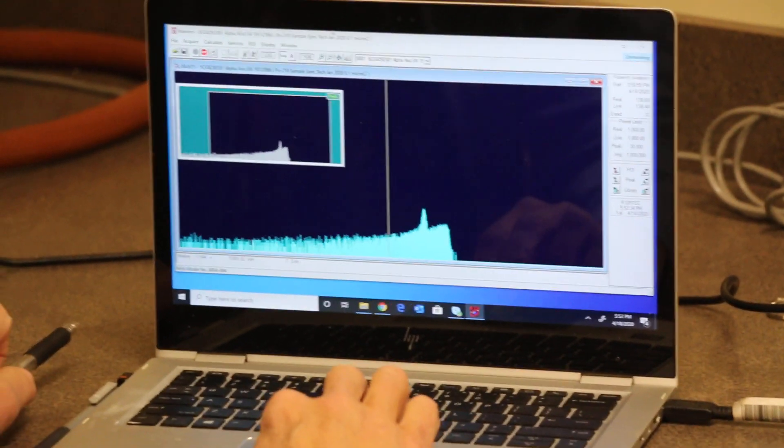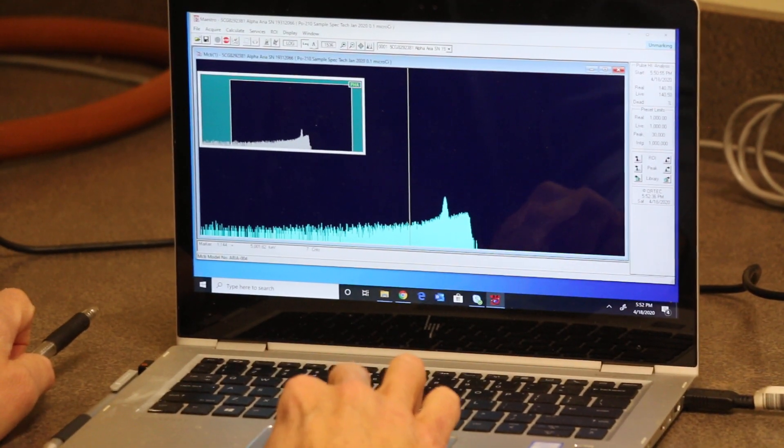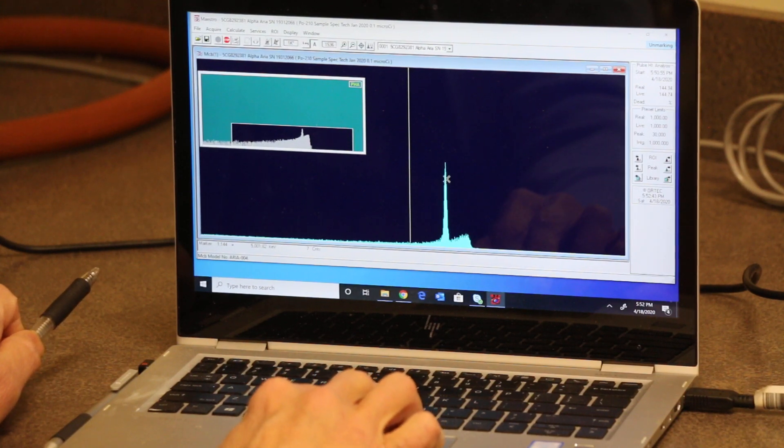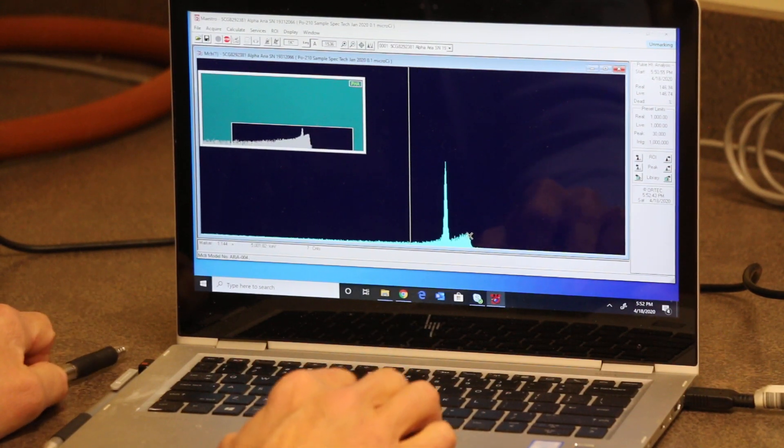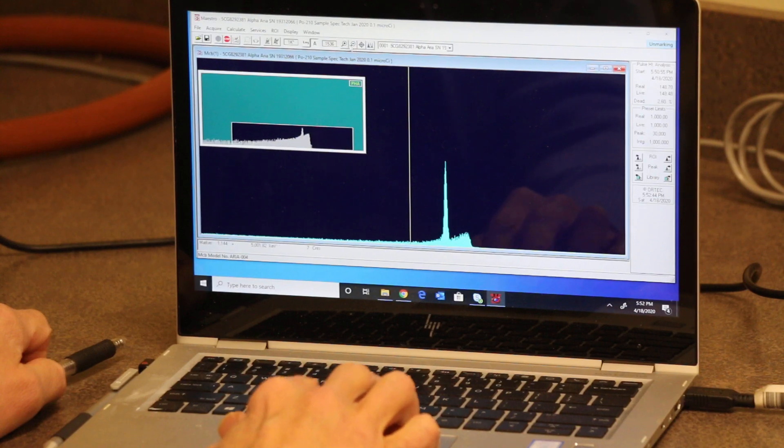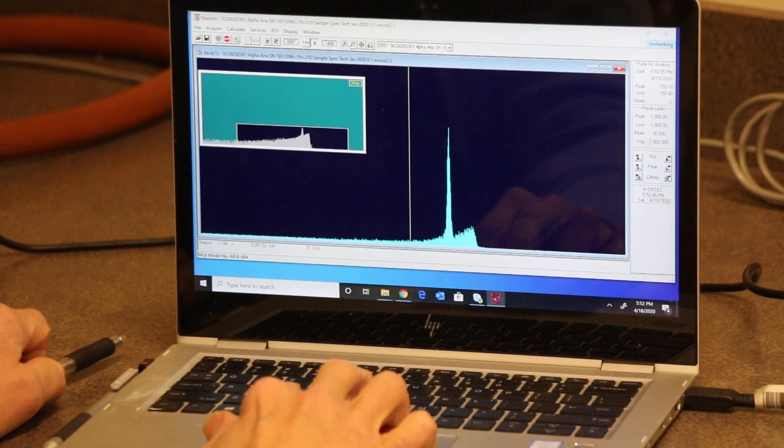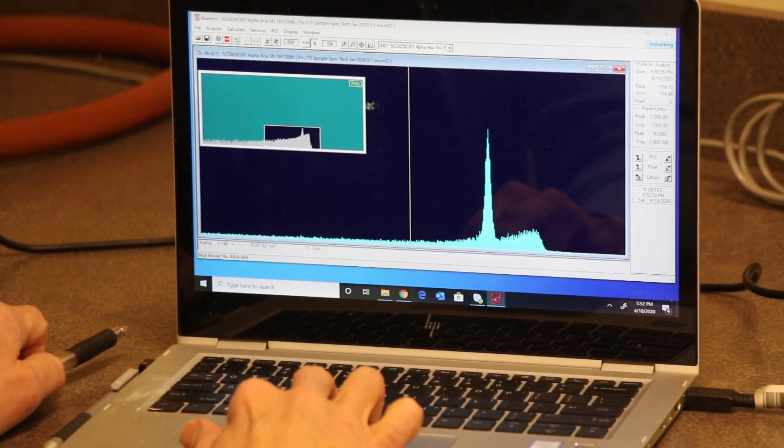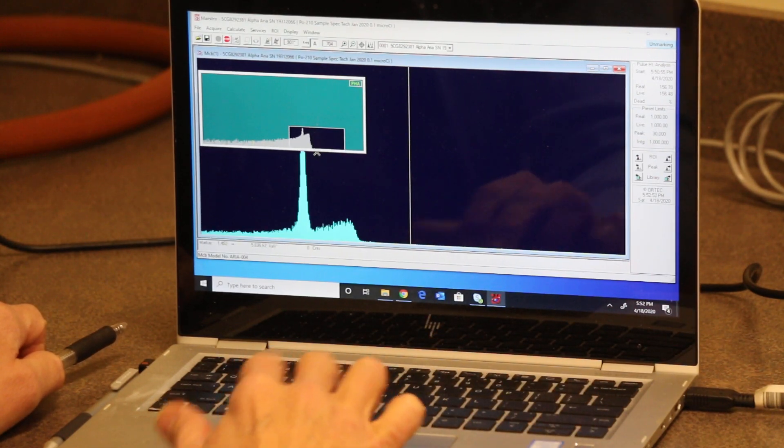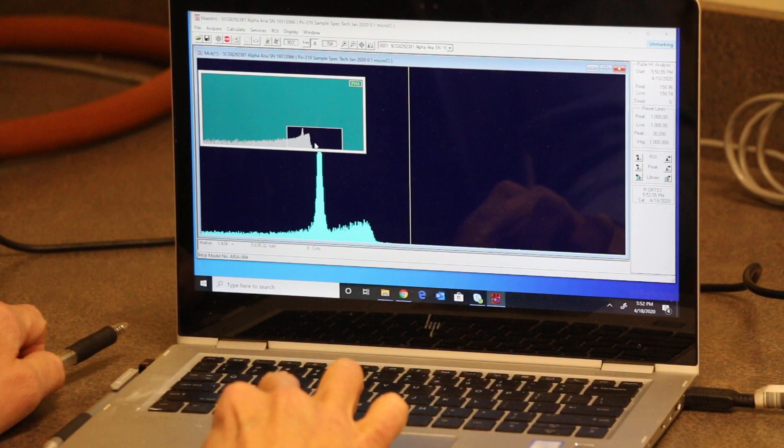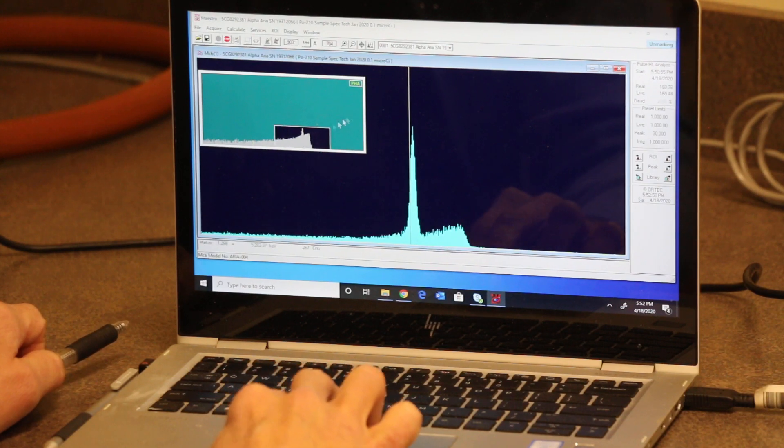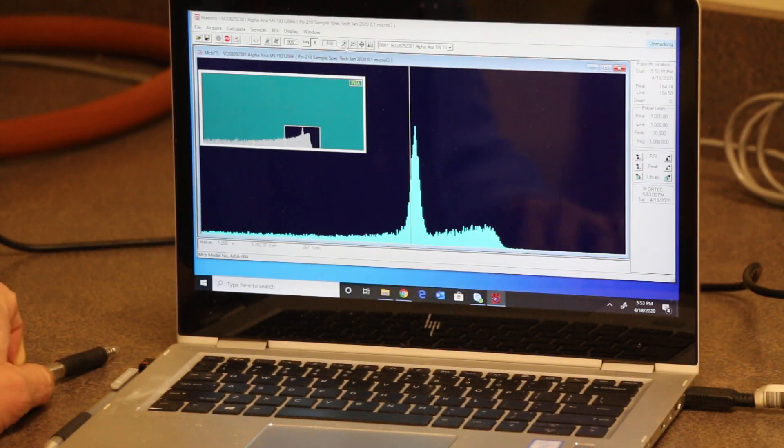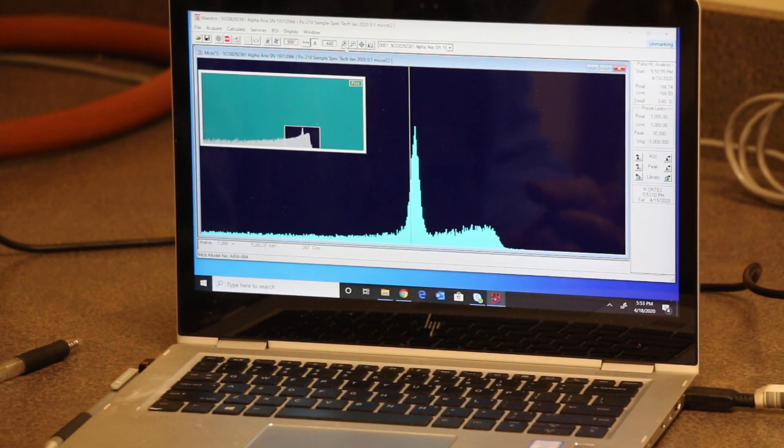So you can see this other peak showing up here. And if I put it on a linear scale, see the polonium peak is very sharp. The americium peak is not. Now, I am going to expand this a little bit. There we go. And you can expand that scale and zoom it.